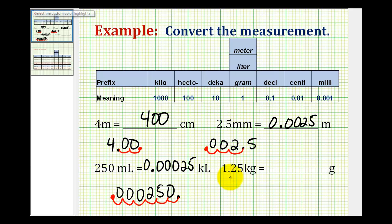And for the last example, we want to convert 1.25 kilograms, that would be this column here, to the basic unit of grams here in the middle. So the shortcut would be to move the decimal point one, two, three places to the right. Or we could also just multiply by 1,000.